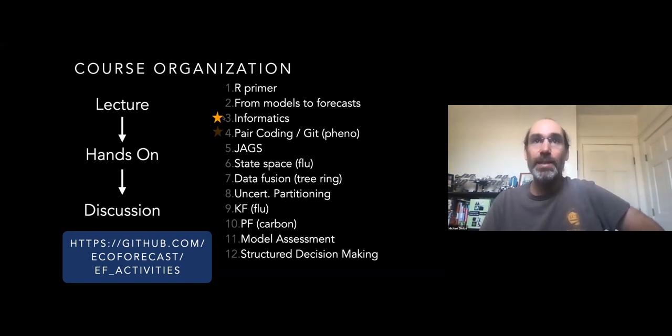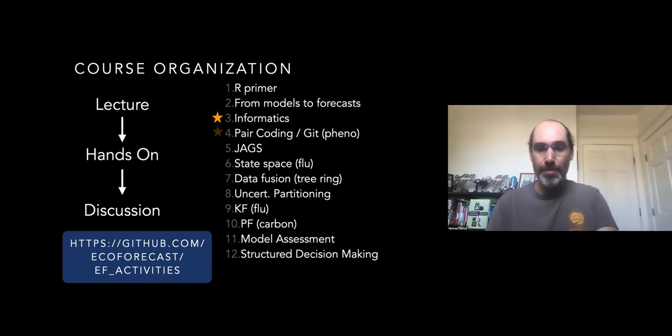I would love to revamp the informatics and pair coding activities to really focus on actual code that sets up the workflow for a simple null forecast front to back before we dive into more complex statistical concepts and do that kind of work. It's two labs and introduce pair coding and git concepts at the same time. Right now the pair coding and git lab doesn't really, it has code in it on phenology, but it doesn't really teach you about forecasting.